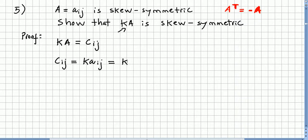But we know that A is skew-symmetric, right? So this is the same as k times minus Aji. Because this is the Aij, this is the transpose Aji with a minus, so it's skew-symmetric.